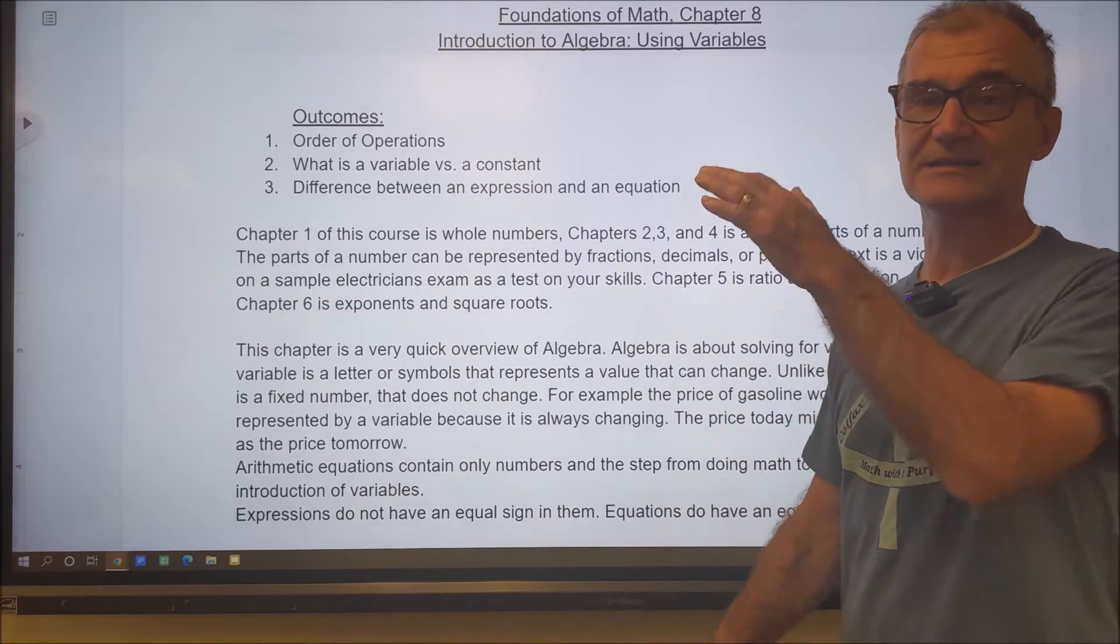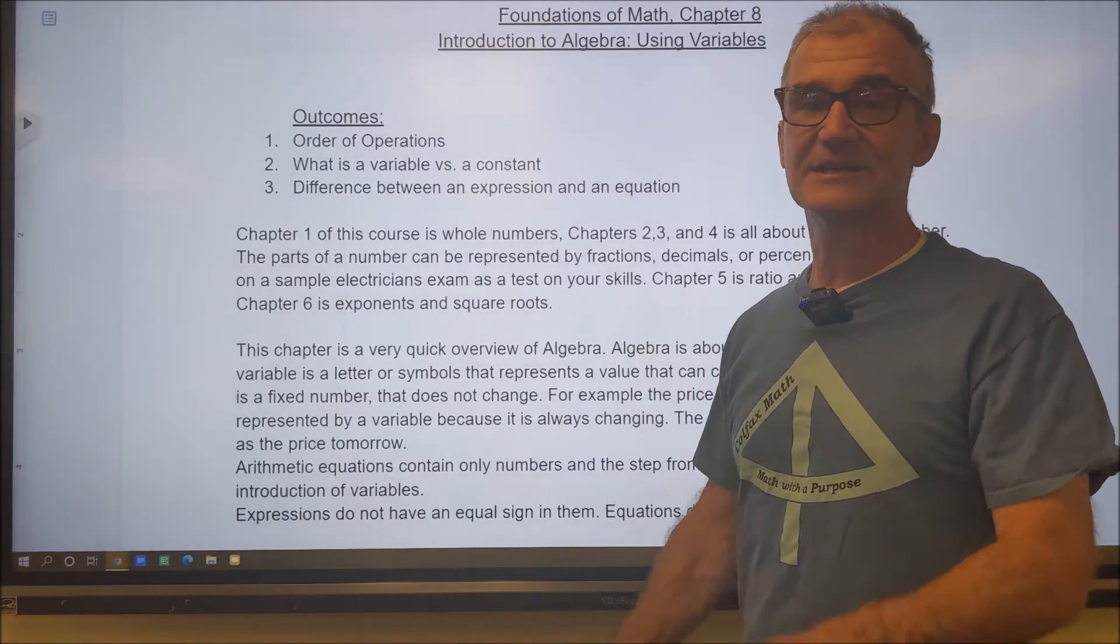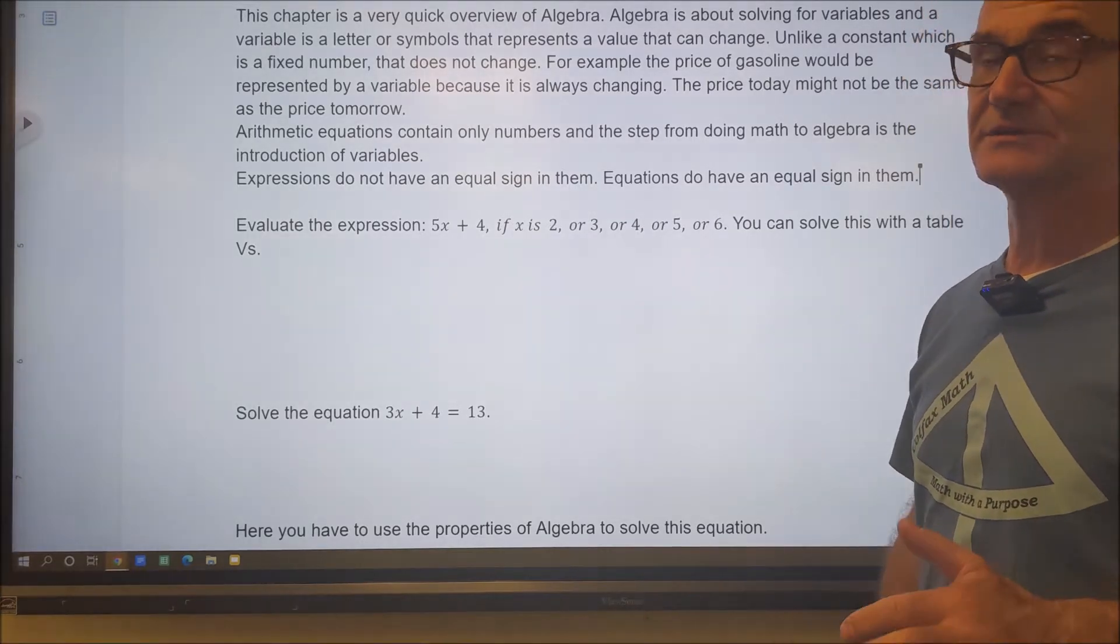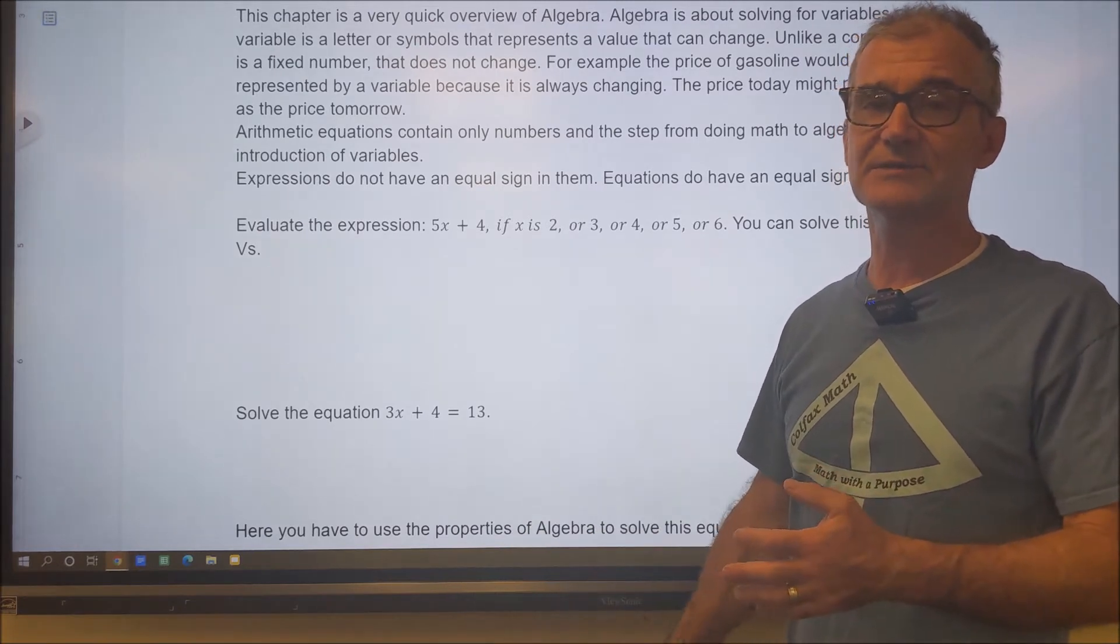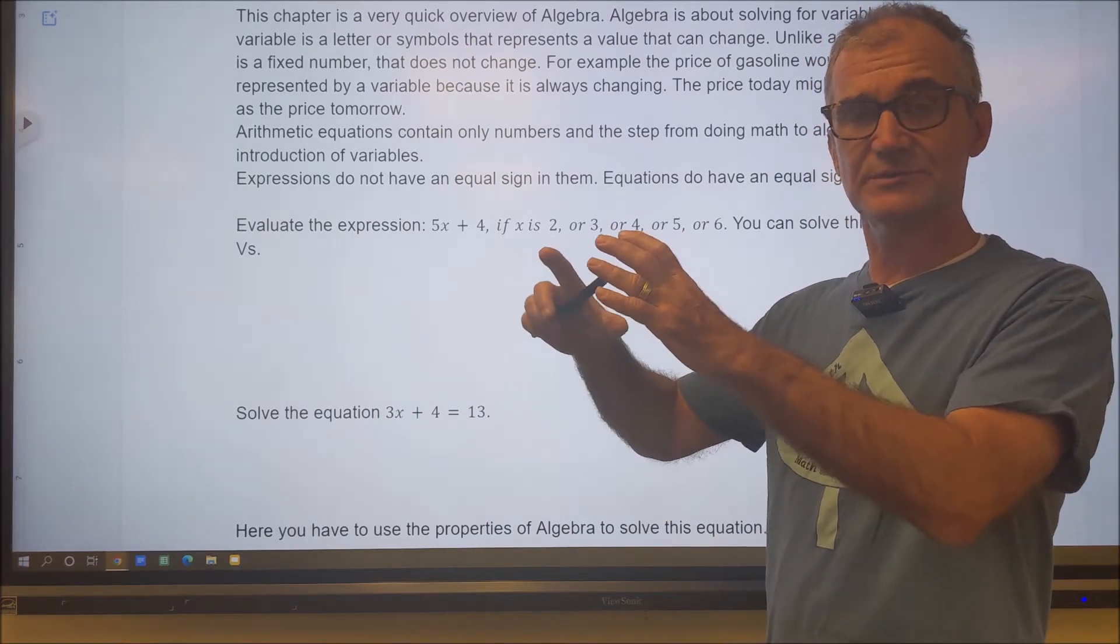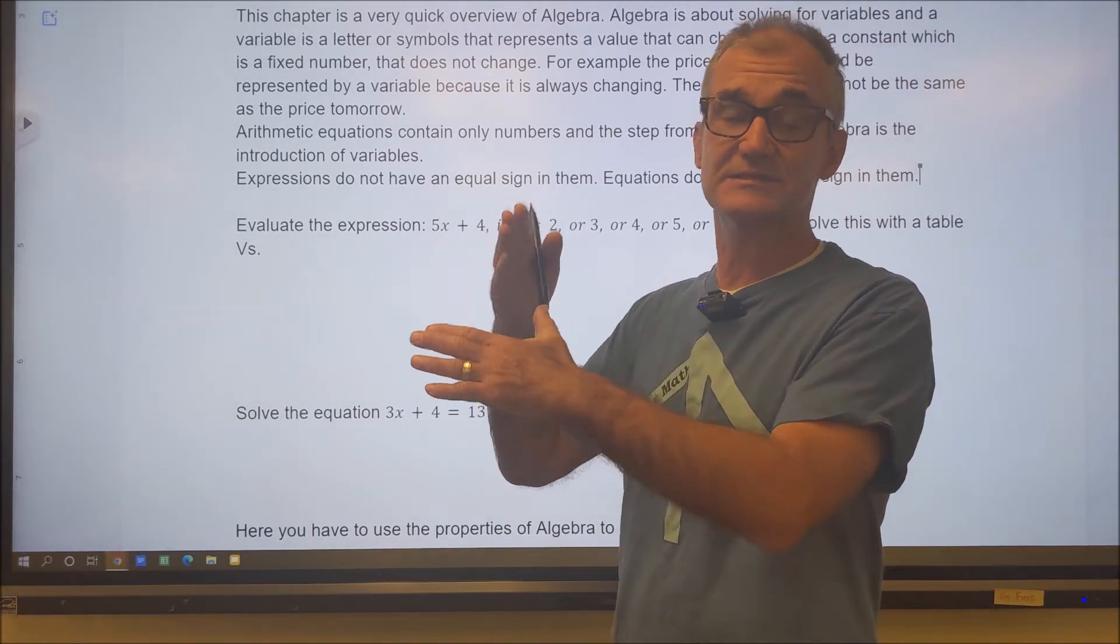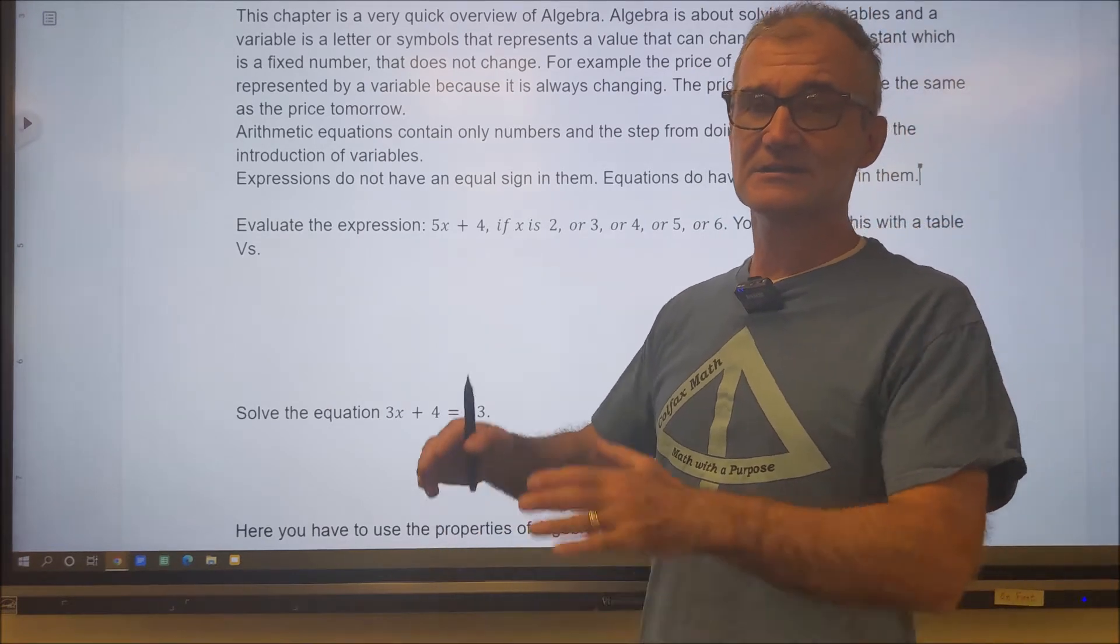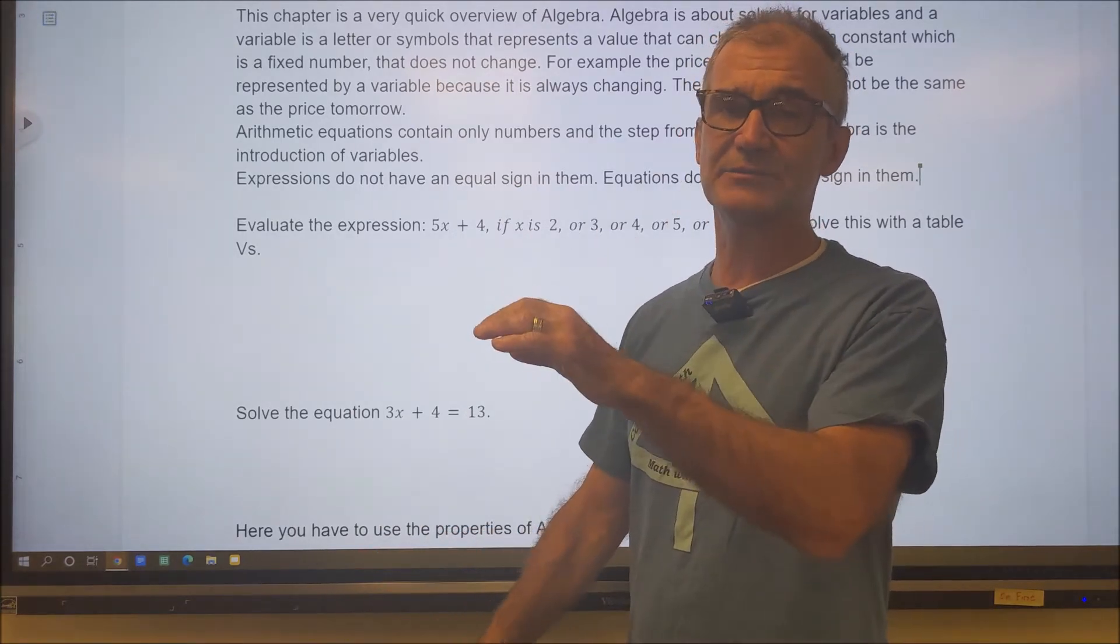Let's go ahead and get started with Chapter 8. This chapter is all about the introduction of a variable, and a variable is something that could change. Let's say you wanted to graph the price of gasoline over time. The price of gasoline today is going to be different than it is tomorrow or yesterday. So you're not going to just have a number, which would be a constant. You're actually going to represent the price of gasoline with a letter. Usually that letter is X, and that X means the price of gasoline.